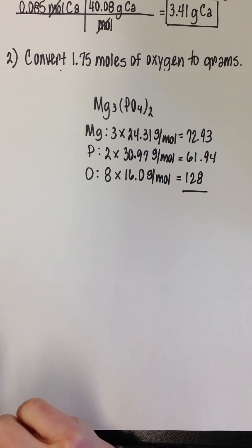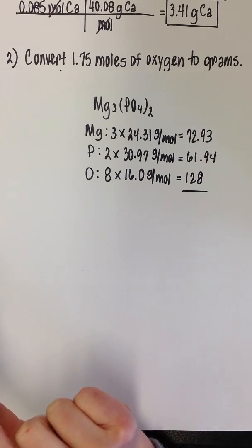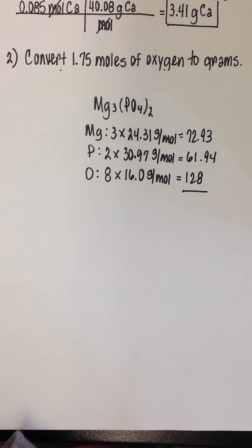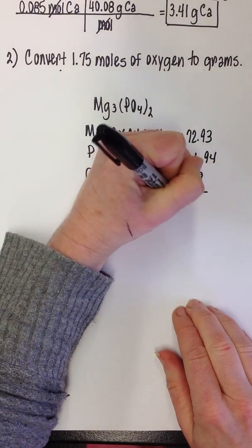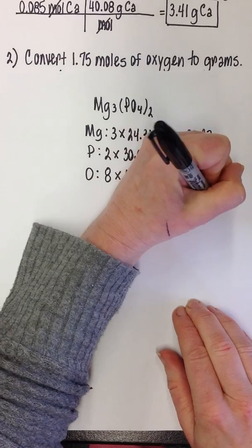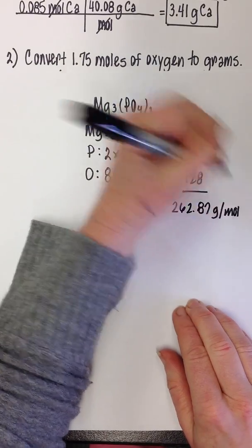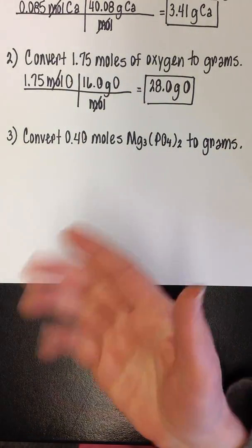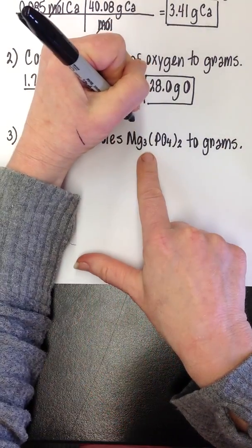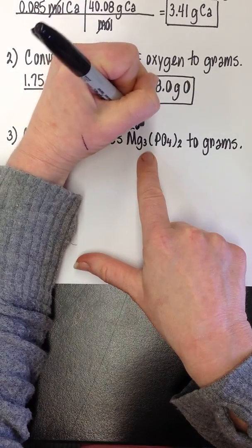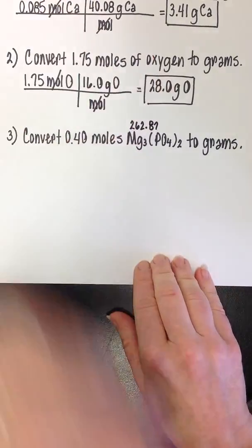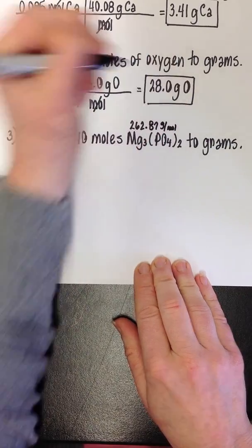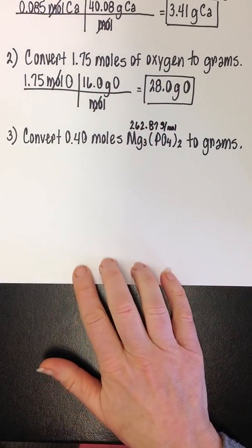So 128 plus 61.94 plus 72.93 is going to give me a mass of 262.87 grams per mole. I had to do all of that just to have that number to plug in once I start the problem. So I'm just going to make a note of it right here. This has a mass of 262.87 grams per mole. Now, when I need it, it's ready for me to plug in.